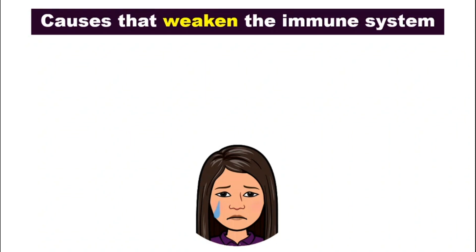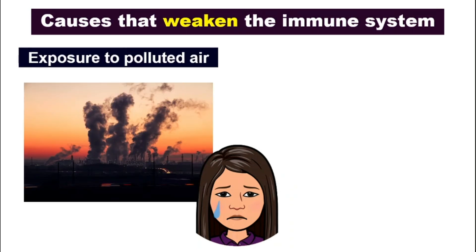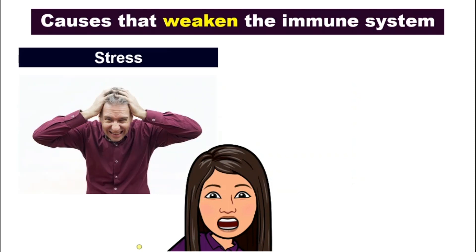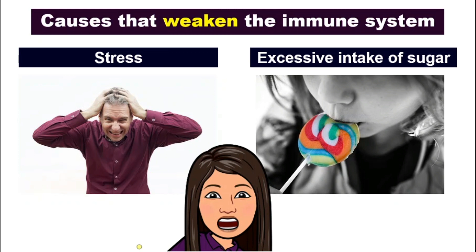Now that we know how important it is to have a strong immune system, let's look at things that can weaken it. Number one: being exposed to polluted air can weaken our immune system — that is why we all must play our part to ensure clean air. Number two: exposure to pesticides — another reason we discourage their use, and you have learned in chapter two that biological control can be used instead. Number three: stress — it is very important to learn how to manage stress so our immune system stays strong. Finally, excessive intake of sugar can also make our immune system weak.